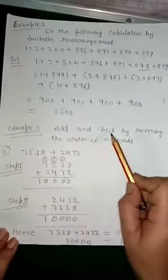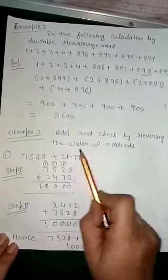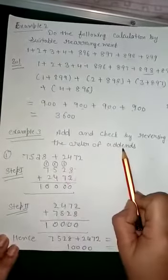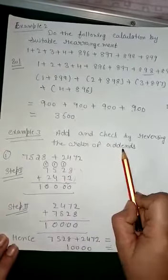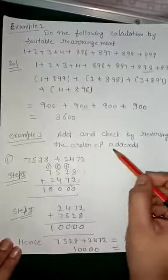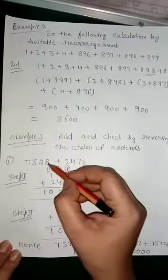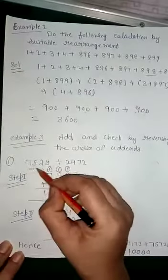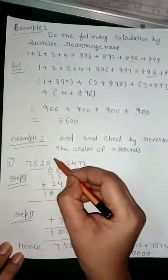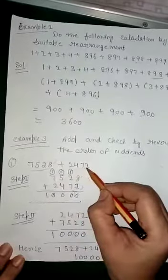Example number three: Add and check by reversing the order of addends. First, we will identify the addends — this is the first addend and this is the second addend.